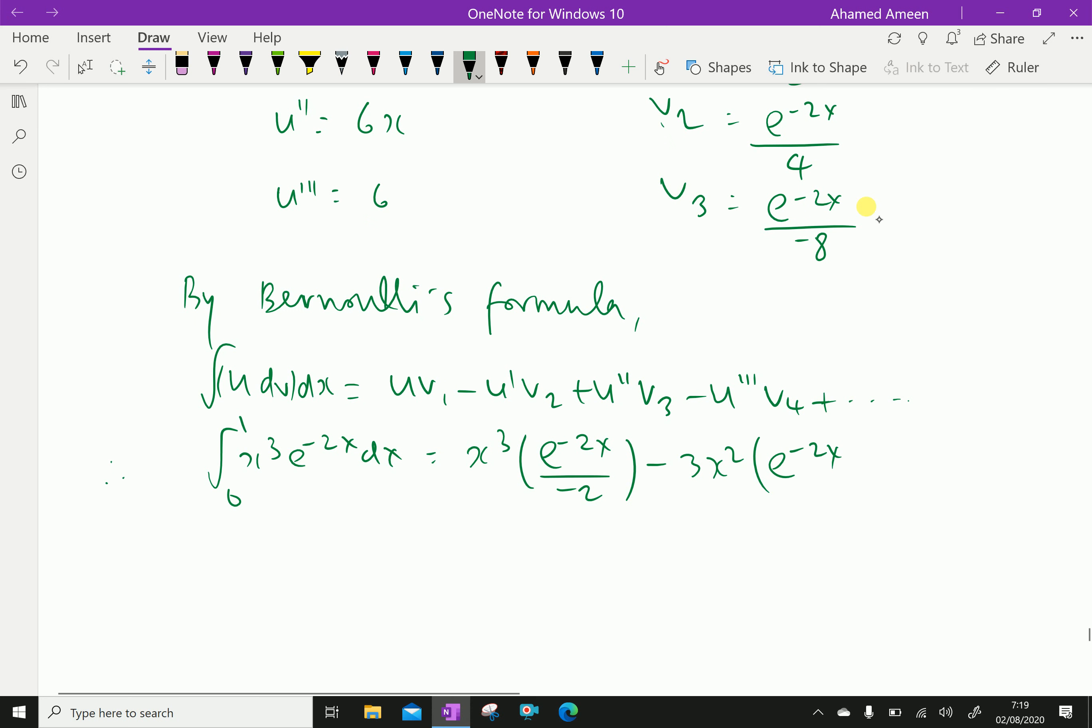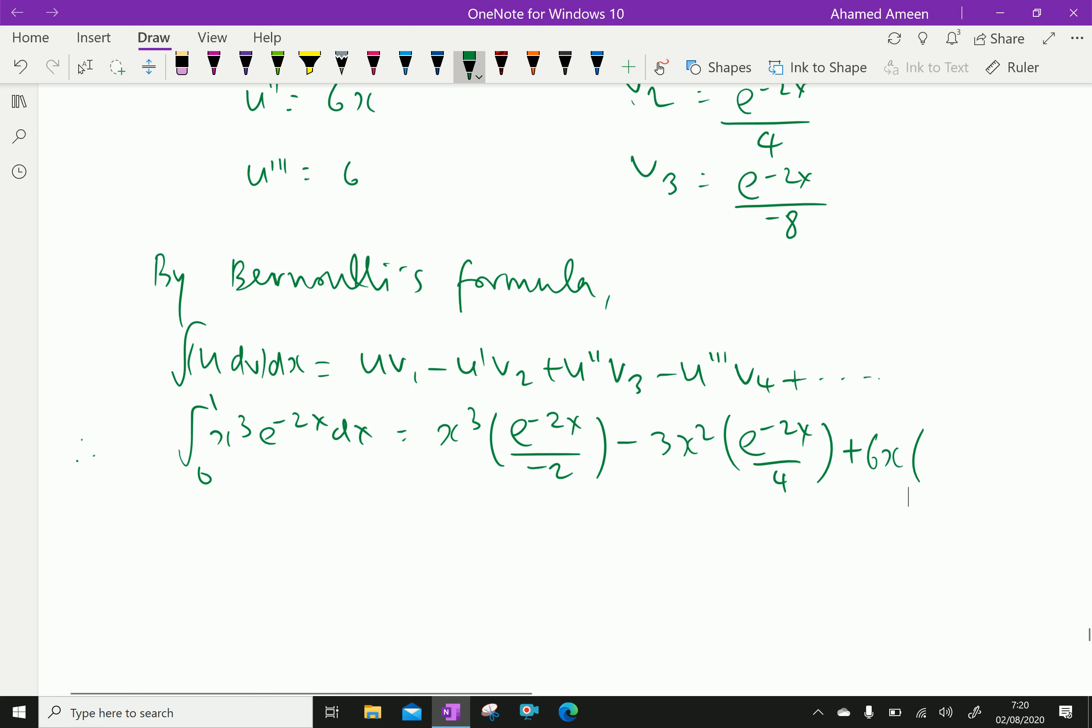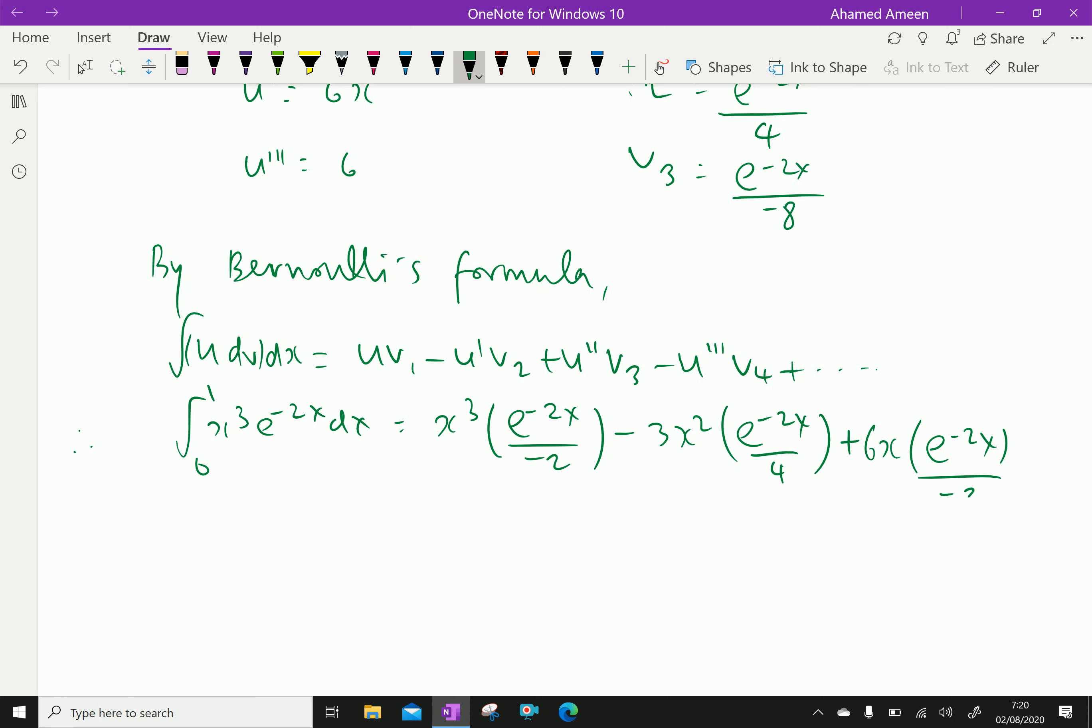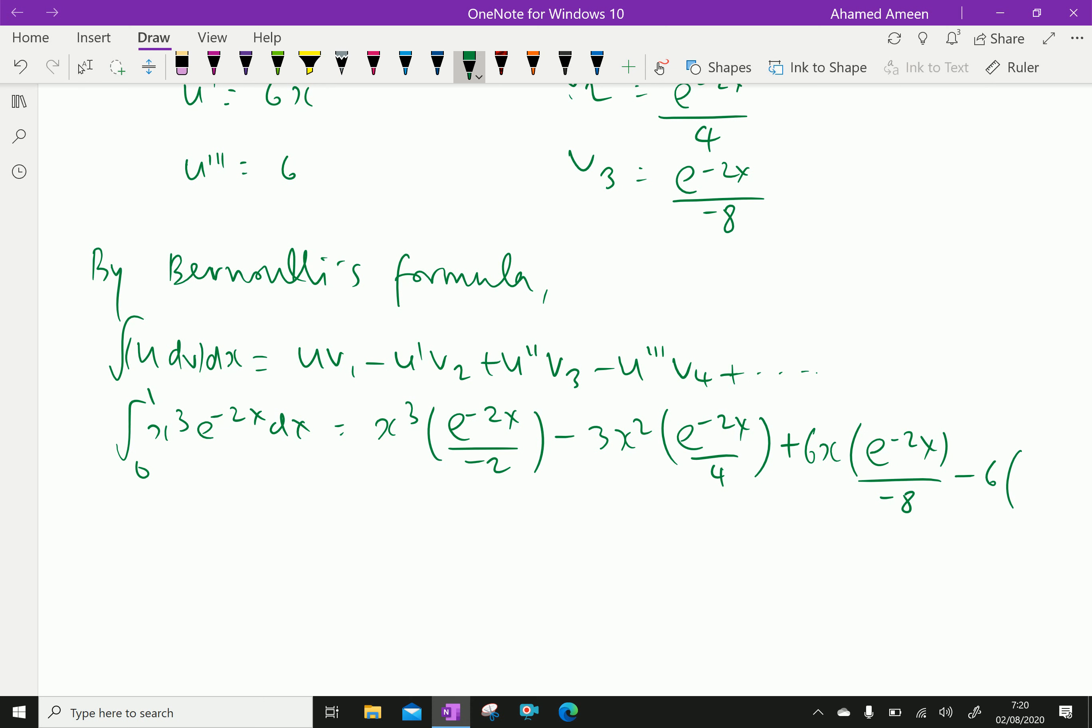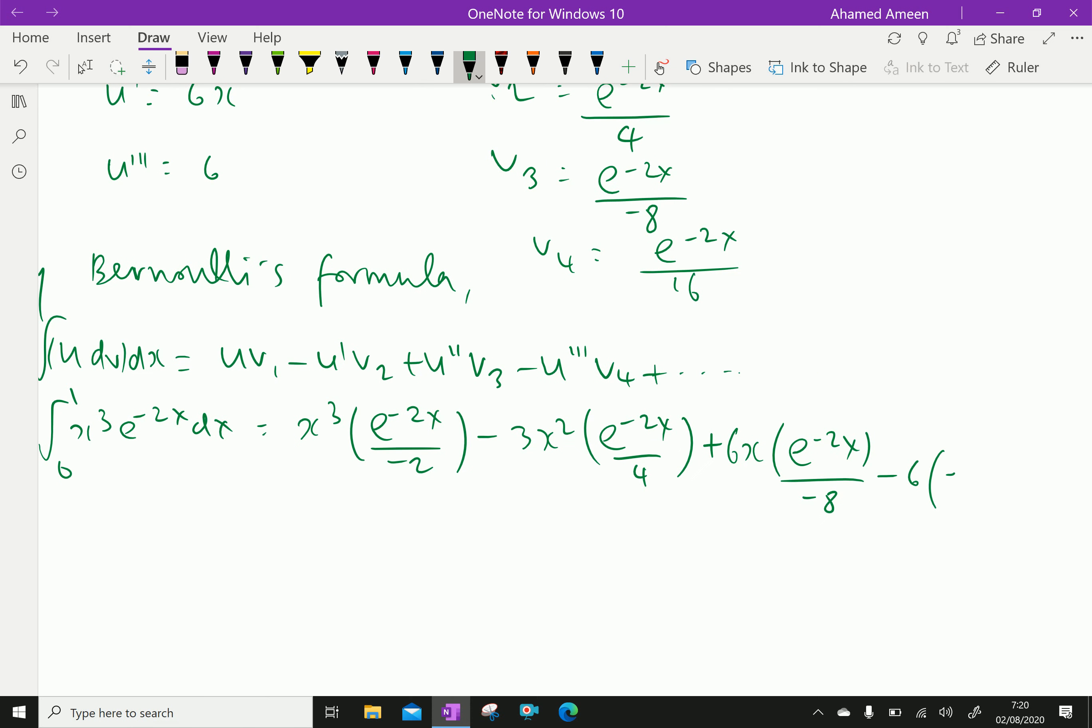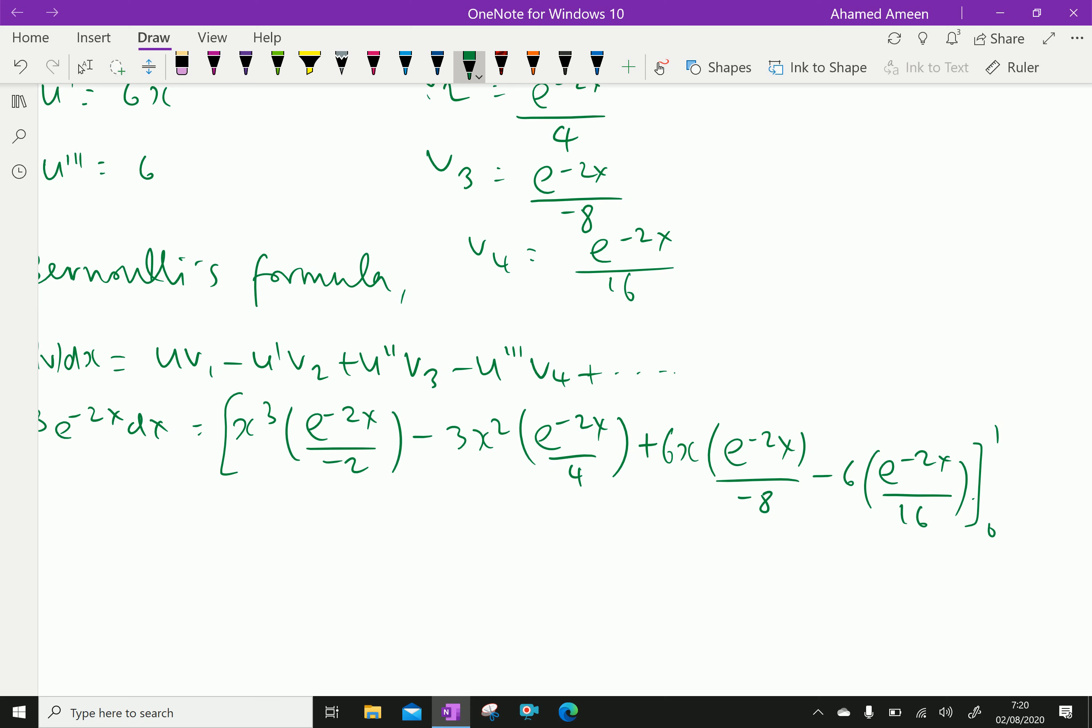Plus u2 dash is 6x and v3 is e power minus 2x over minus 8. Then, minus u3 dash is 6 and v4 is e power minus 2x over 16. All with 0 to 1.